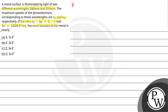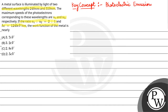The key concept here is that in the phenomena of photoelectric emission, the kinetic energy ½mv² is equal to hc/λ minus φ₀. H is Planck's constant, C is the speed of light, λ is the wavelength of incident radiation, and φ₀ is the work function.